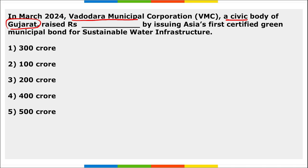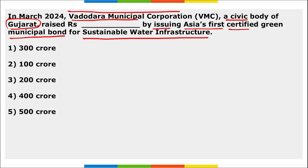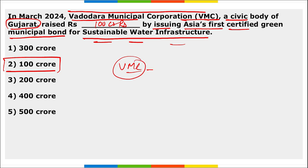In March, Vadodara Municipal Corporation — a civic body of Gujarat — raised 100 crore rupees by issuing Asia's first certified green municipal bond for sustainable water infrastructure. The coupon rate — or interest rate — provided here will be 7.9 percent.